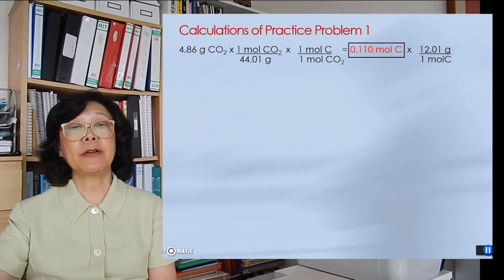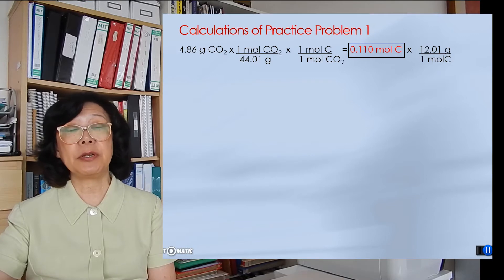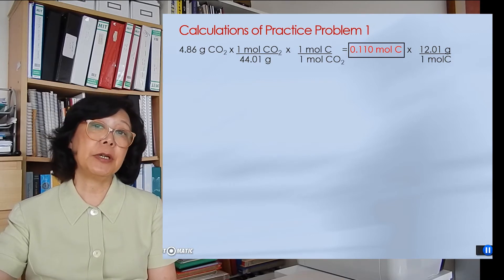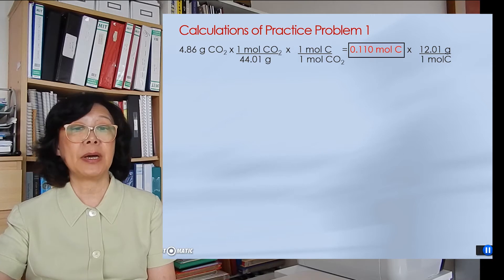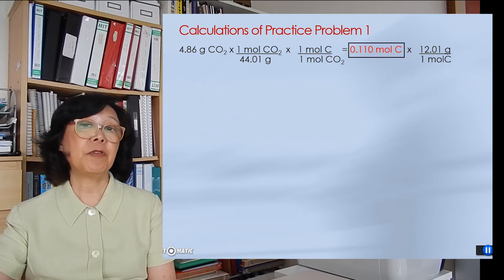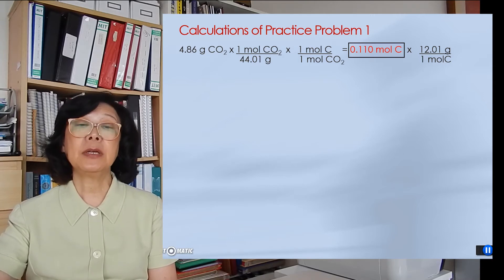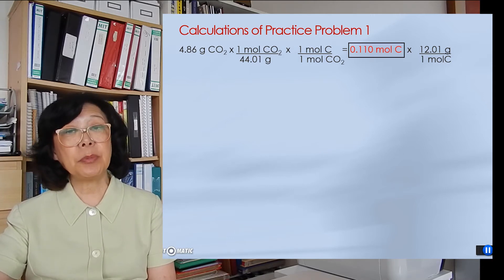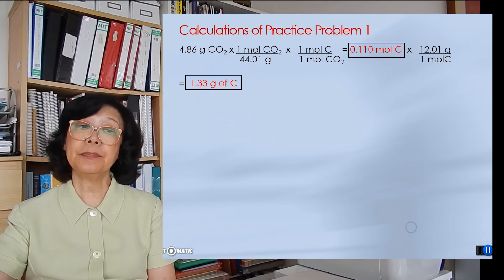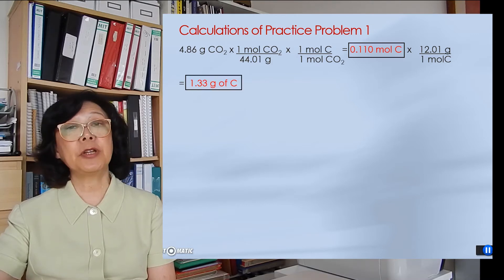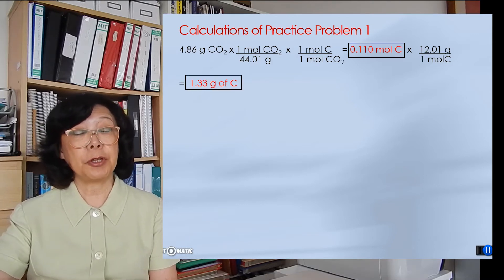We take 4.86 grams of carbon dioxide and convert it into moles of carbon dioxide by dividing by the molar mass, 44.01 grams. Because one mole of carbon dioxide contains one mole of carbon, we obtain 0.110 moles of carbon, which converts to 1.33 grams of carbon.